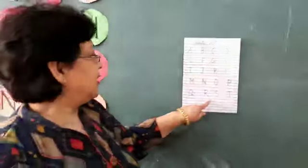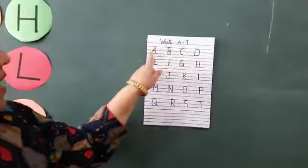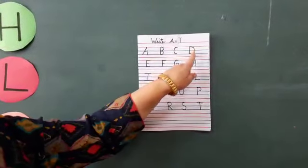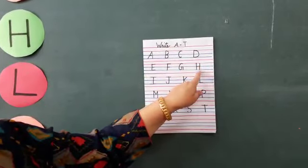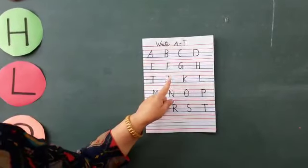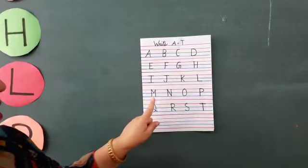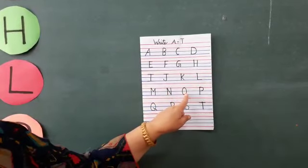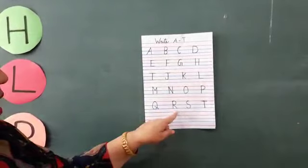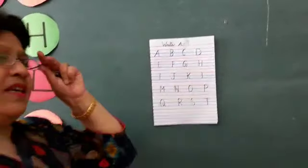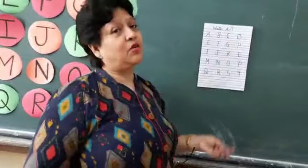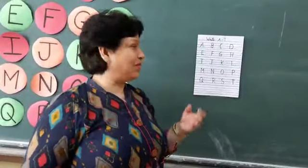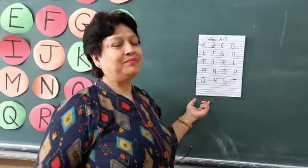So you will write A to T. A, B, C, D, E, F, G, H, I, J, K, L, M, N, O, P, Q, R, S, T. Okay. You will write this A to T in your orange notebook and send it to your ma'am. Bye bye.